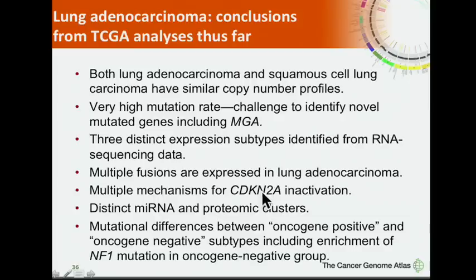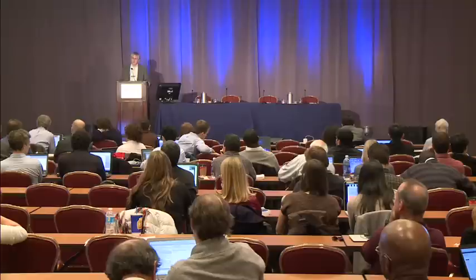In conclusions thus far: both lung adenocarcinoma and squamous cell lung carcinoma have very similar copy number profiles. There is a very high mutation rate, making it a real challenge to identify novel candidate mutated genes including MGA. Three distinct expression subtypes are identified from RNA sequencing data with interesting mutational correlations. Multiple fusions including novel fusions are expressed in lung adenocarcinoma. Multiple mechanisms for CDKN2A inactivation are present, along with distinct microRNA and proteomic clusters, and mutational differences between the oncogene-negative and oncogene-positive subtypes including enrichment of NF1 mutation in the oncogene-negative group.